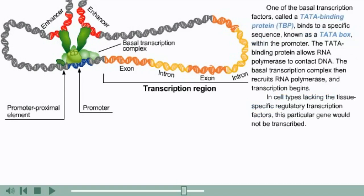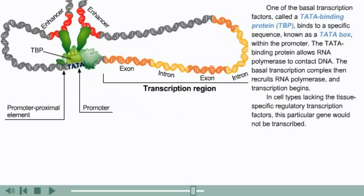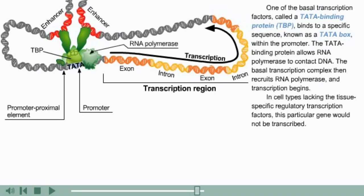One of the basal transcription factors, called a TATA binding protein (TBP), binds to a specific sequence known as a TATA box within the promoter. The TATA binding protein allows RNA polymerase to contact DNA. The basal transcription complex then recruits RNA polymerase and transcription begins.